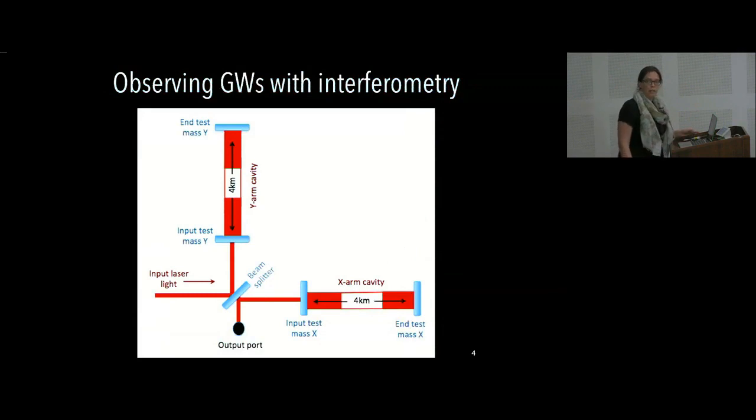So the LIGO detectors have this L-like shape. So we have some input laser light that enters the interferometer. It's split at a beam splitter. 50% of it goes down what we call a Y-arm. And 50% goes down an X-arm, circulates in these arm cavities. And then when it recombines at the beam splitter, if either of these arm lengths have changed relative to the other, this will induce an interference pattern at our output port. So we're just counting photons, the number of photons over time, and this is our gravitational wave signal.